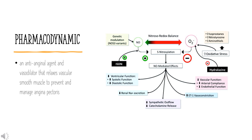By relaxing veins and reducing central venous pressure, nitric oxide causes venous pooling and a decrease in venous return to the heart, thus decreasing cardiac preload. In healthy subjects, stroke volume is decreased and venous pooling can occur in the standing posture, leading to postural hypotension and dizziness.